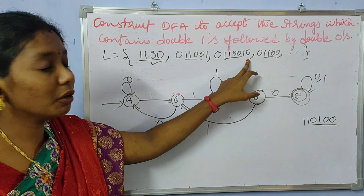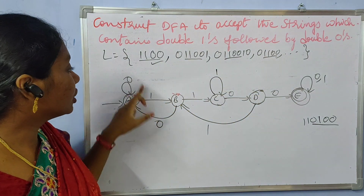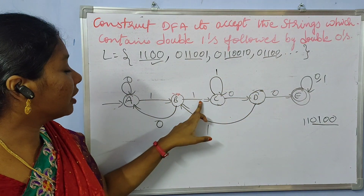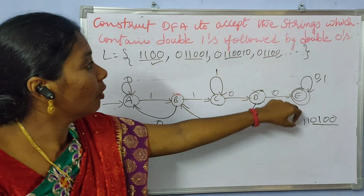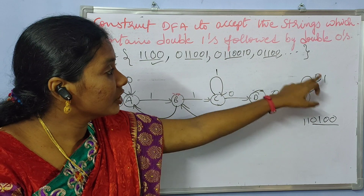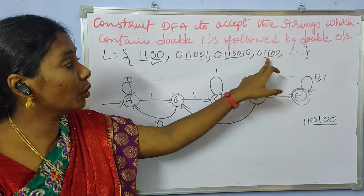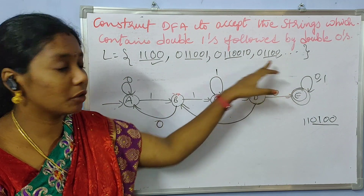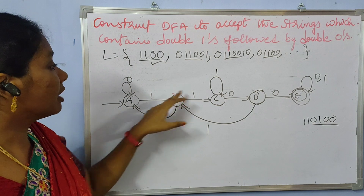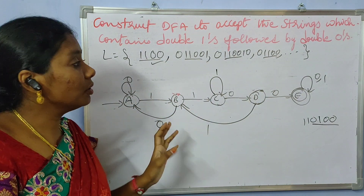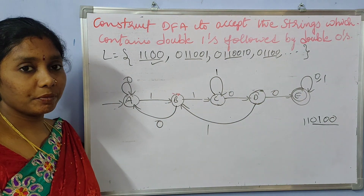And 0, 1, 1, 0, 0, 1, 0 — it is also accepted. And 0, 1, 1, 0, 0, 1, 0 — accepted. And 0, 1, 1, 0, 0 — accepted. So this is the required DFA. Thank you for watching the video.